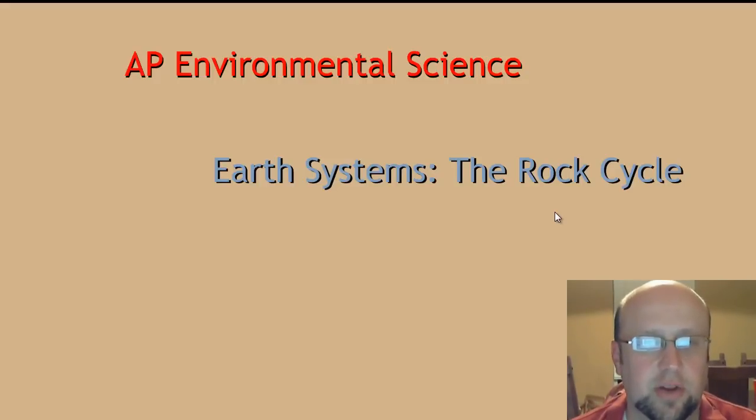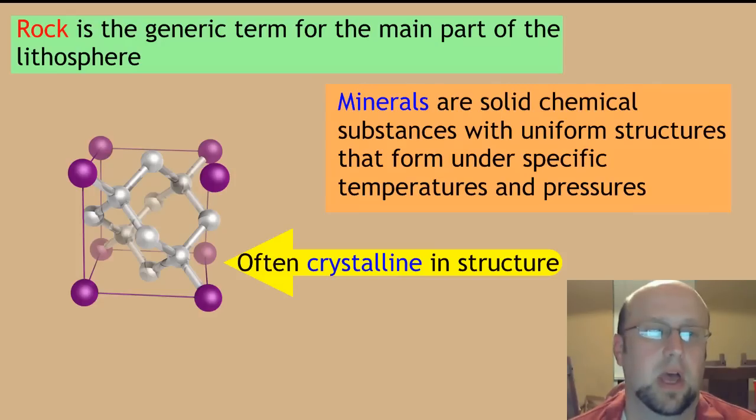Hey guys, Mr. Arnold. We're going to continue our journey through Earth systems and talk about the rock cycle. This is where things become more immediately apparent to us. We're talking about rocks, and rock is a generic term that basically means the stuff that makes up the lithosphere. Remember, we talked about our layers of the Earth, and the crust is really what we're worried about here. The crust is made up of rock.